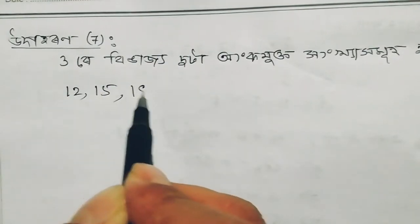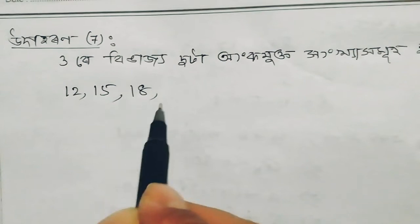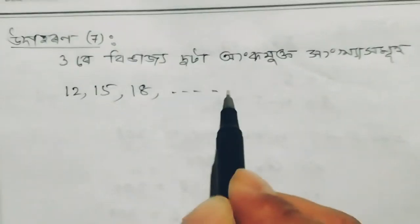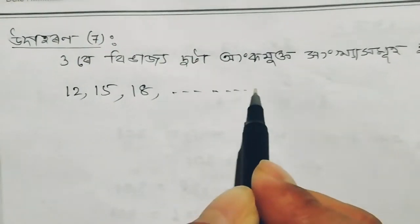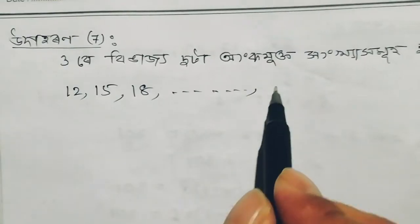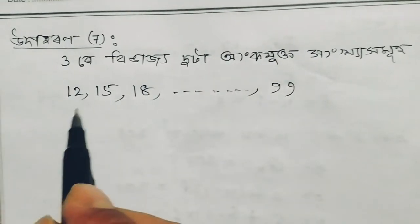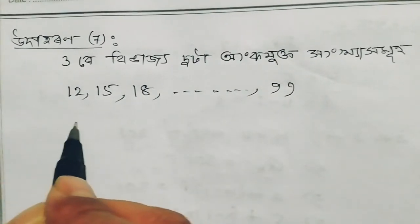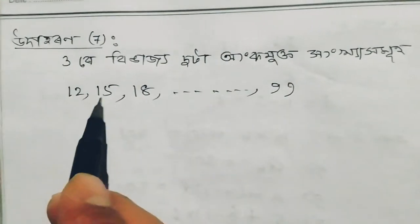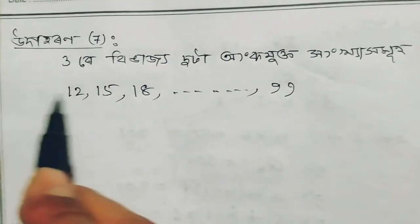So this is 18, 21... and 99. So this is an AP. This method: 15, 12, 3...